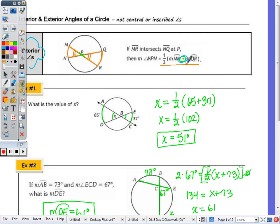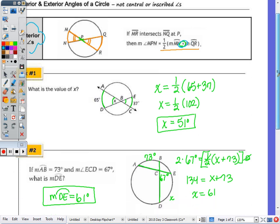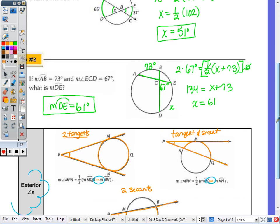It's always the angle is half the sum of the two arcs, or the angle is half the difference of the two arcs. When you're given an angle, say the theorem out loud, and that'll help you find the arc.